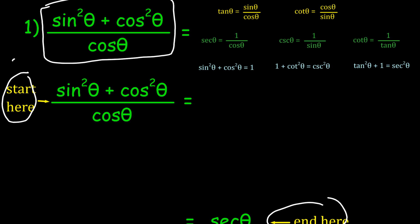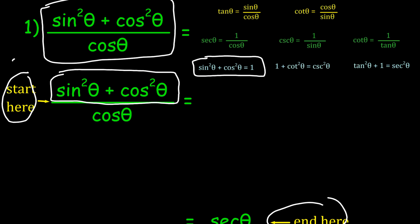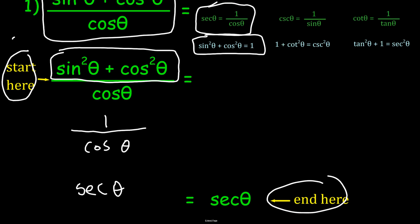Sine squared plus cosine squared is right there in the numerator, and that equals one. So I can change sine squared plus cosine squared into one. That gives us one over cosine theta as the first step in this proof. Then, one over cosine is secant, so we can change that into secant theta. Now that we've shown secant equals secant, we're done — typically in proofs you draw a rectangle, or if you want to brighten your day, a smiley face.